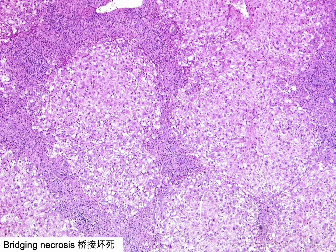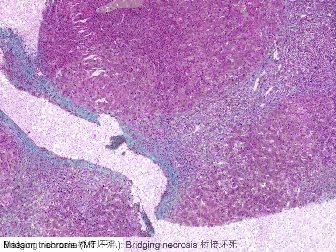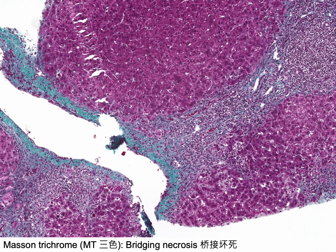Fifth, the orcein stain does not highlight the presence of elastic fibres. Bridging necrosis demonstrates a characteristic two-tone appearance on the trichrome stain, with darker staining in the wall of the central vein and lighter staining in the bridging necrotic region. This requires an adequate step of differentiation, usually by phosphomolybdic acid during the trichrome stain, as inadequate or excessive differentiation leads to overstaining or understaining respectively.